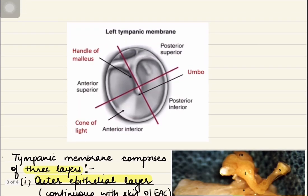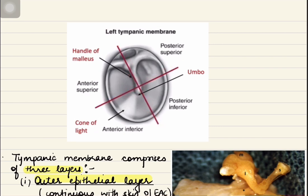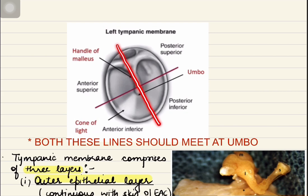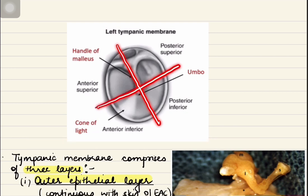Now let us look at how the tympanic membrane is divided into quadrants. We draw a line parallel to the handle of malleus and another line perpendicular to this line, dividing the tympanic membrane into four quadrants. For this left tympanic membrane, the four quadrants are: anterosuperior, anteroinferior, posterosuperior, and posteroinferior.